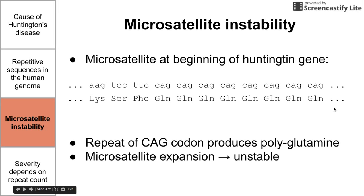We have several glutamines at the beginning of the Huntington gene — this is called a polyglutamine repeat. This polyglutamine repeat is unstable because during DNA replication, the polymerase encoding the GLN can slip forward or slip backwards. If the polymerase slips backwards, we're going to have an expansion — a microsatellite expansion of the polyglutamine sequence — causing us to have more glutamines than we originally had. You can imagine that if a polymerase slips backwards, it grabs an extra glutamine as it passes over that extra CAG codon.